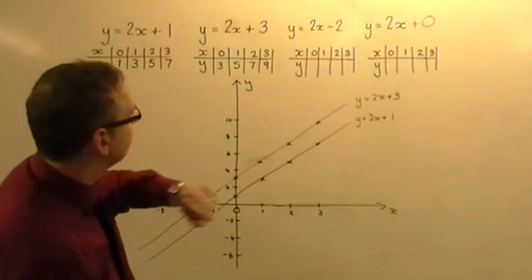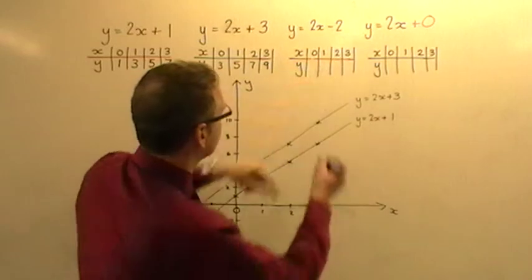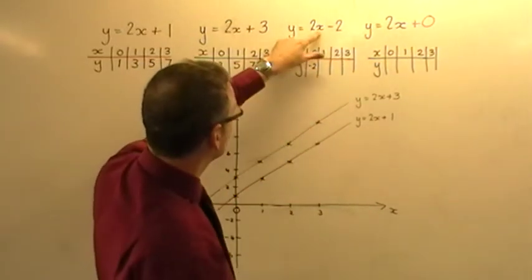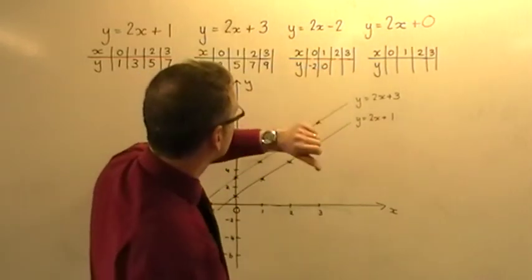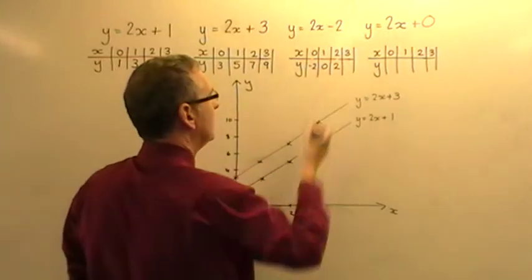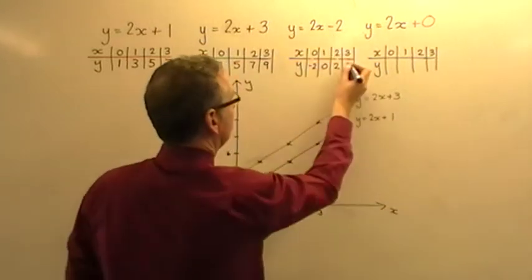Let's do the next one, y equals 2x minus 2. If x is 0, 2 times 0 is 0, take away 2, gives minus 2. If x is 1, 2 times 1 is 2, take away 2 is nothing. If x is 2, 2 times 2 is 4, take away 2 is 2. And if x is 3, 2 times 3 is 6, take away 2 is 4.